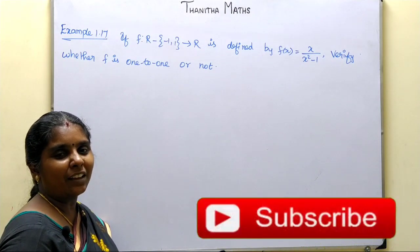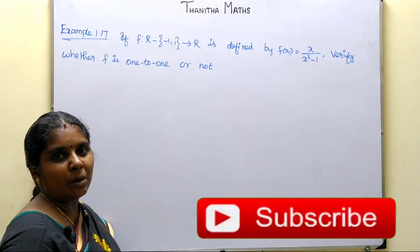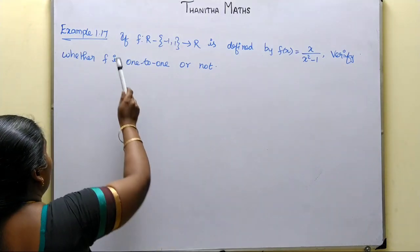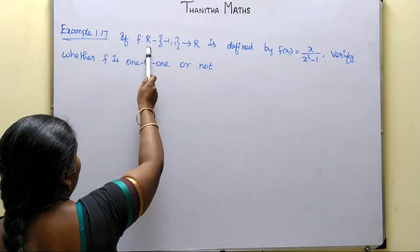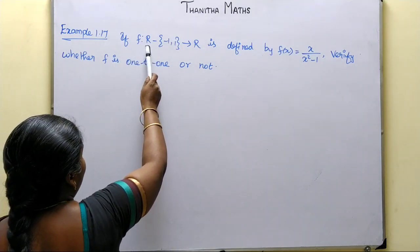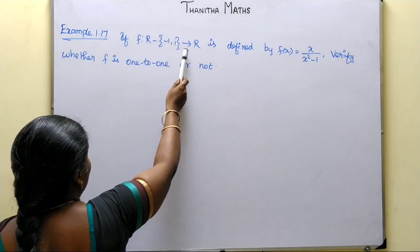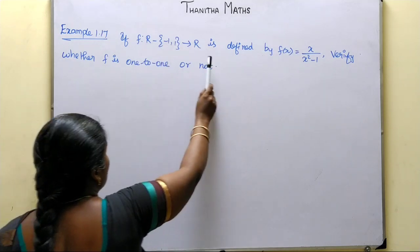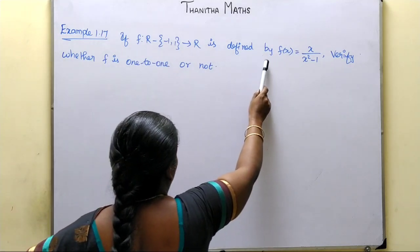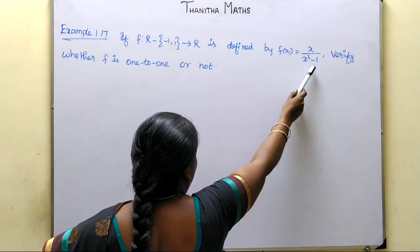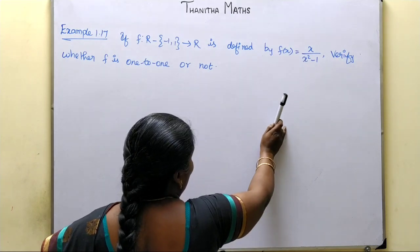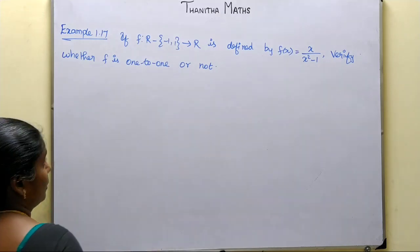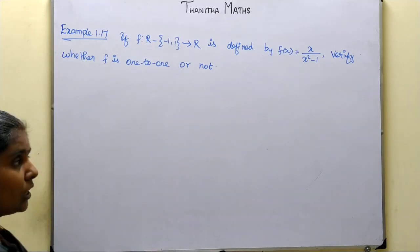Welcome students. Now we are going to talk about Example 1.17. A function from ℝ\{-1,1} to ℝ is defined by f(x) = x/(x²-1). Verify whether f is one-to-one or not.